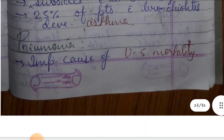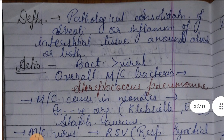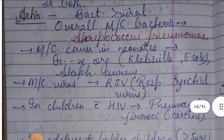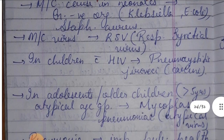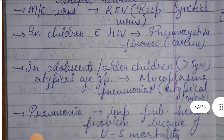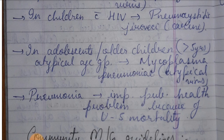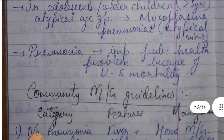Next is pneumonia, which is an important cause of under-five mortality. By definition, it involves pathological consolidation or inflammation of interstitial tissue. Regarding etiology, bacterial causes are more significant than viral. The most common bacterium overall is Streptococcus pneumoniae. In neonates, the most common causes are gram-negative organisms such as Klebsiella. The most common virus is RSV. In HIV-positive children, Pneumocystis jirovecii (formerly carinii) is involved. In older children, greater than five years, atypical organisms like Mycoplasma are important.